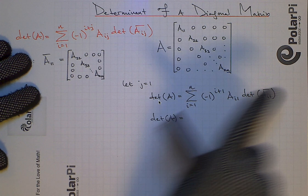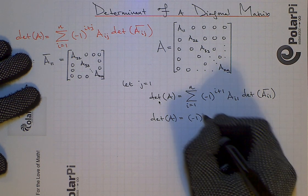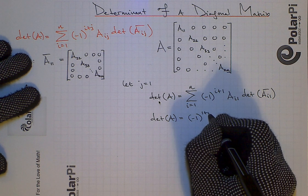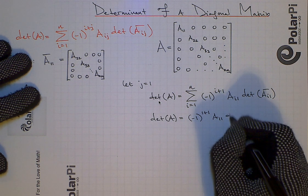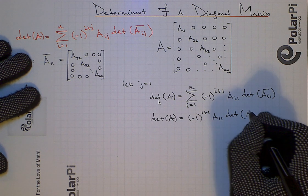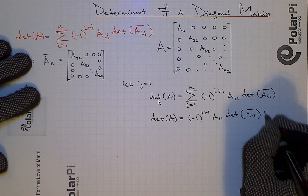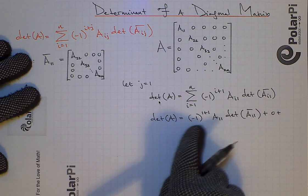In other words, this whole sum is going to simply reduce to negative one to the power of one plus one when i is equal to one, and then A11, again, when i is equal to one, and then determinant of A11 bar. Everything else that comes after is a zero.